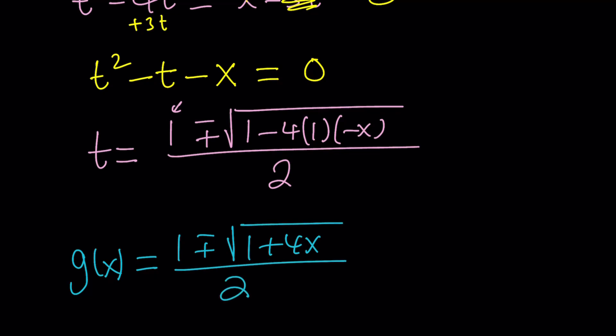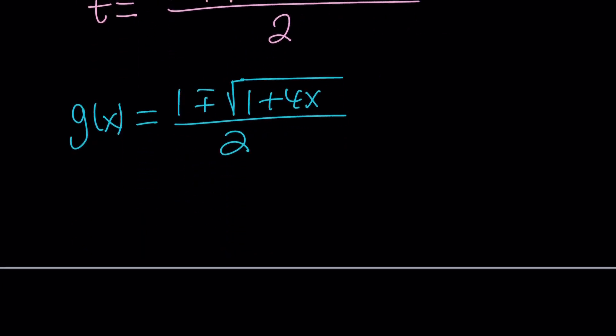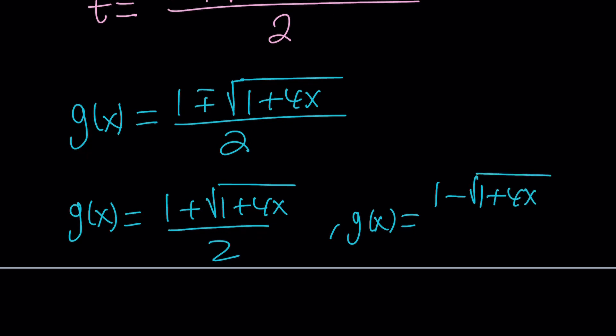So, we're trying to solve for g of x, let's say. And we got it. But why is there a plus minus sign? Because there are two solutions. So, we can write first solution as g of x equals 1 plus the square root of 1 plus 4x divided by 2. And then the other one as 1 minus the square root of 1 plus 4x divided by 2.